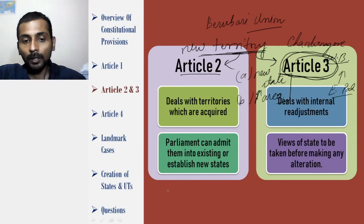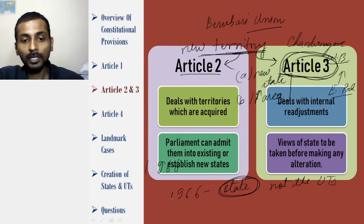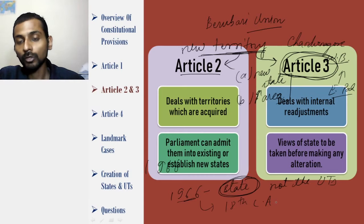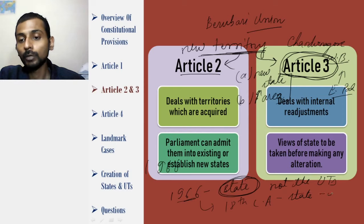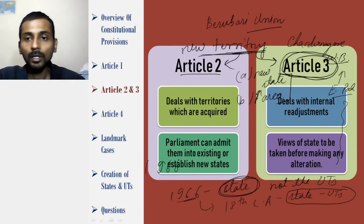Earlier, until 1966, Article 3 only dealt with creation or modification of states and not union territories. After 1966, the 18th Constitutional Amendment was passed, and it added an explanation to Article 3 which said that 'state' here would also include union territories. So ever since the 18th Amendment, Article 3 can be used to create or readjust boundaries of union territories as well. We will discuss this again when examining Article 4.